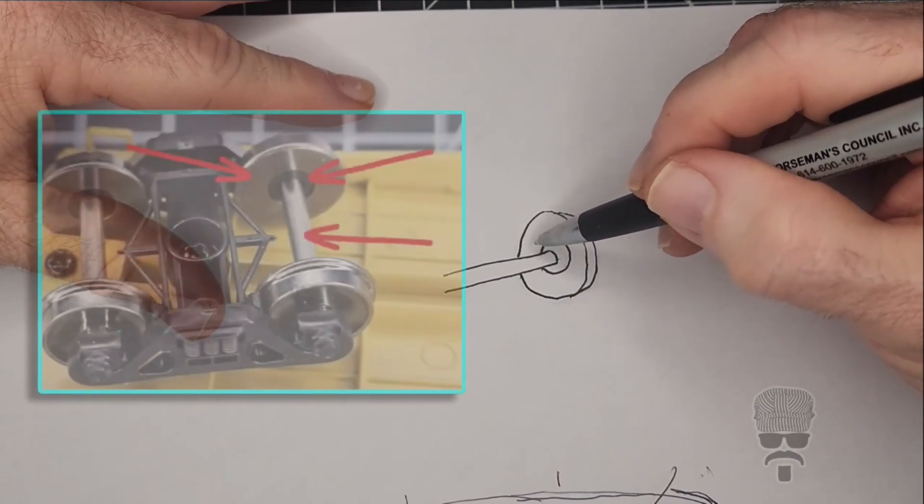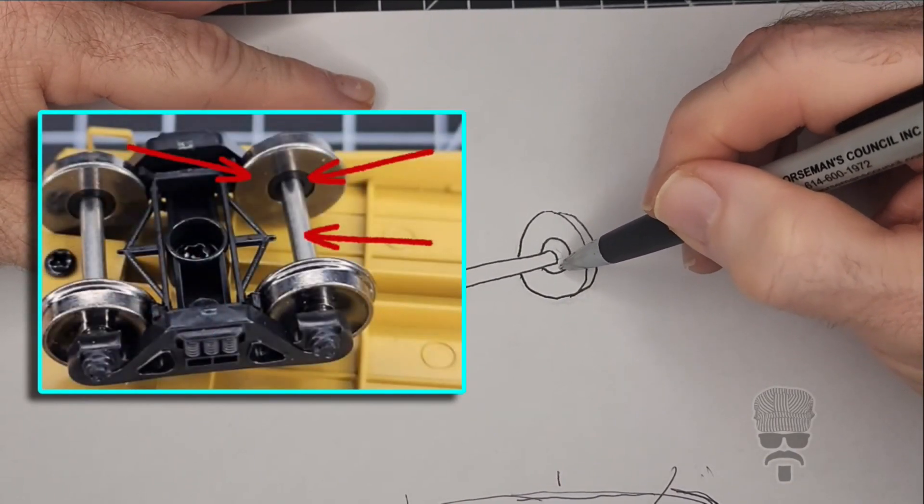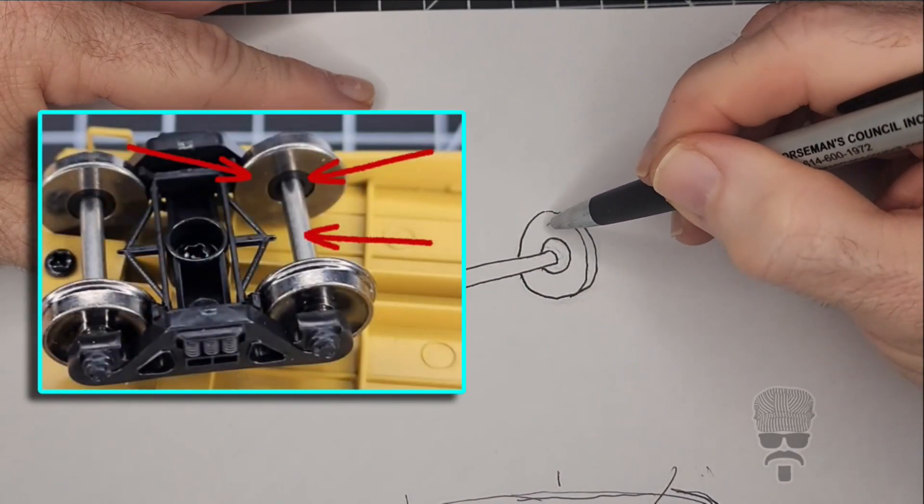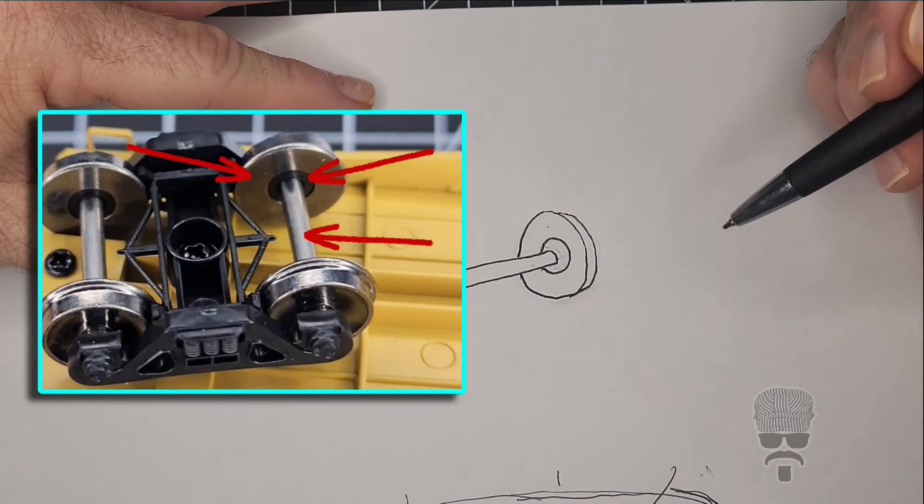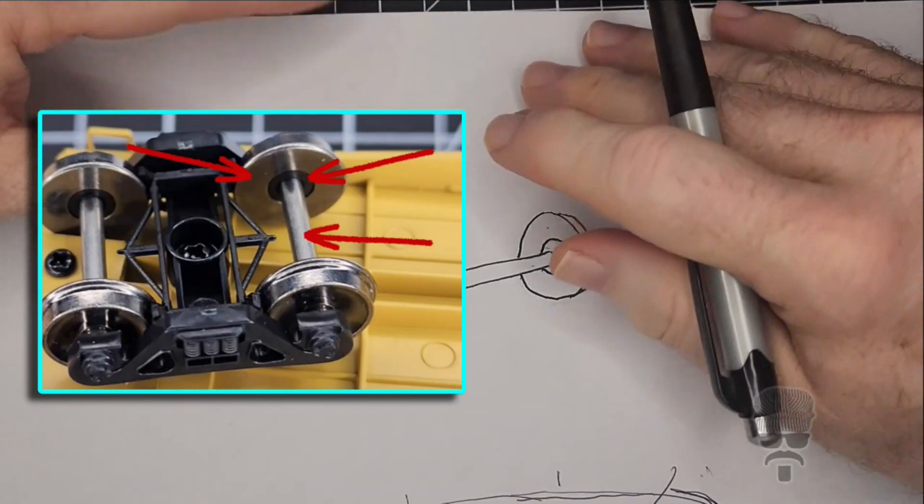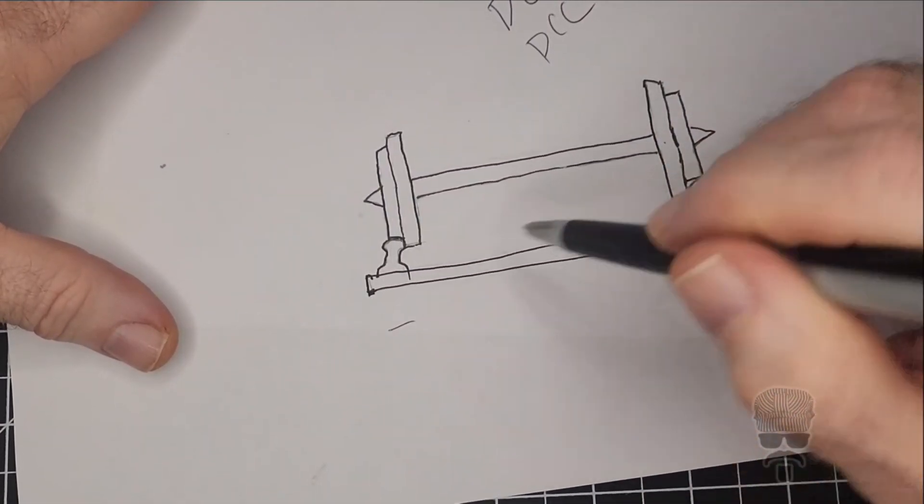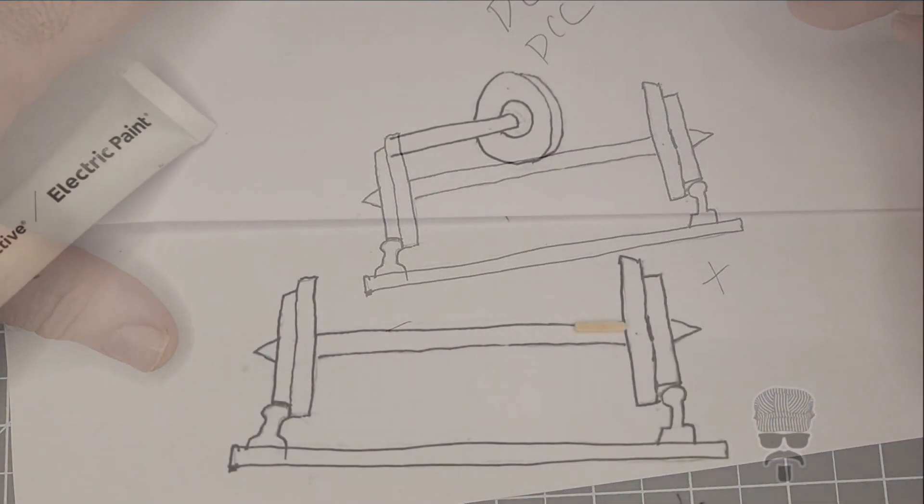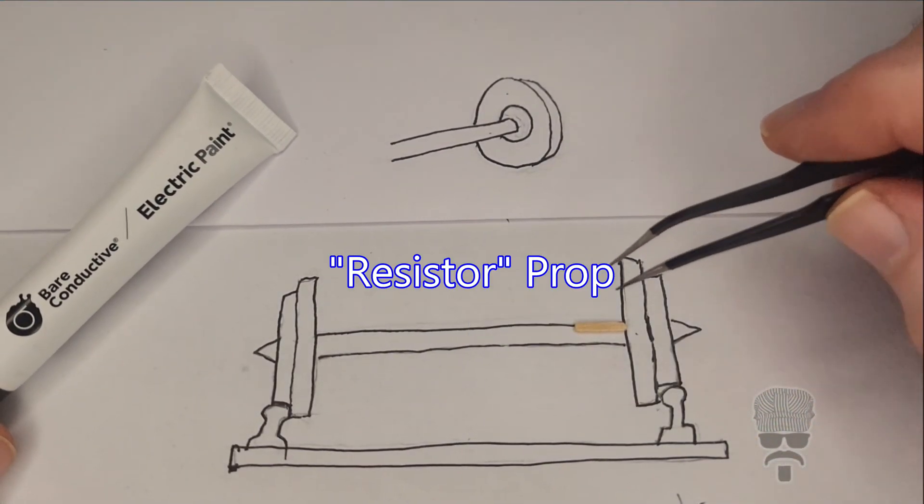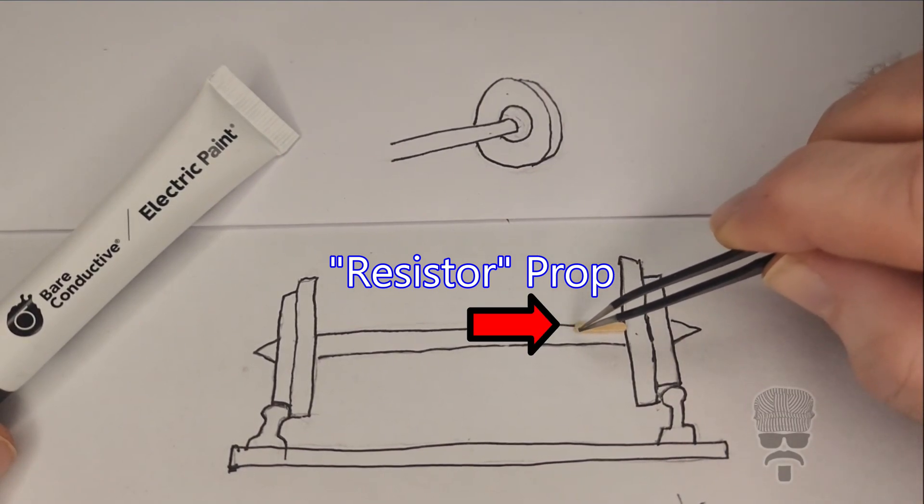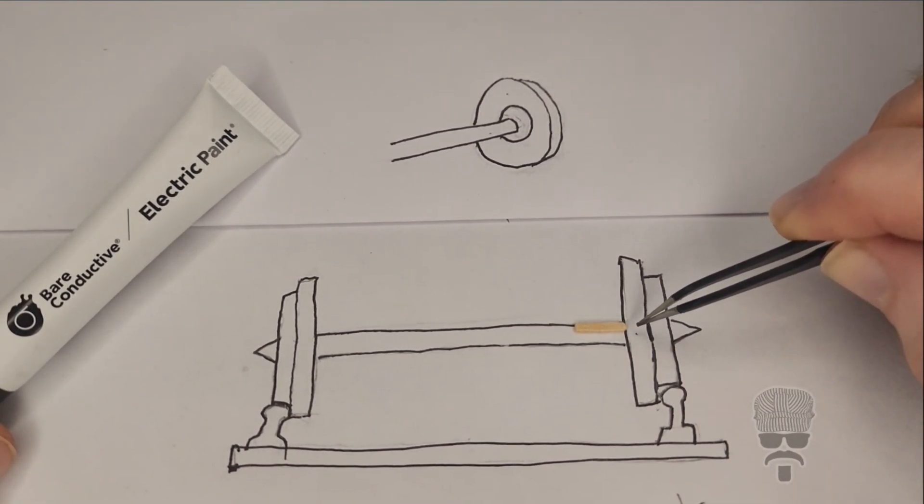Here is the anatomy of the wheelset. You've got the bushing here in the middle that separates the metal wheel from the metal axle. This is what we're trying to bridge. The bushing prevents the wheelsets from shorting the track. Only one wheel on each wheelset is insulated from the axle.